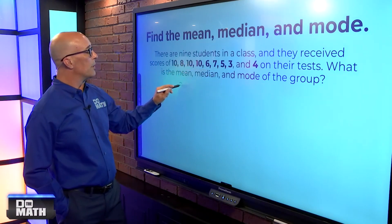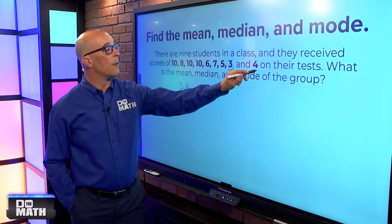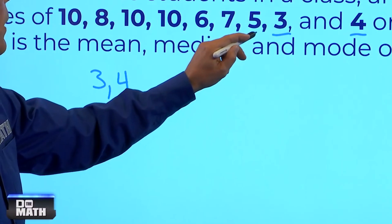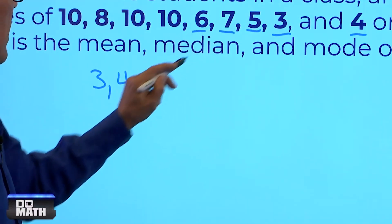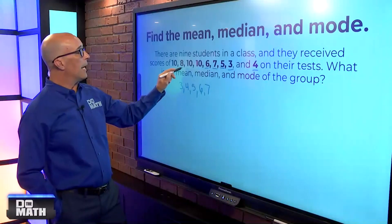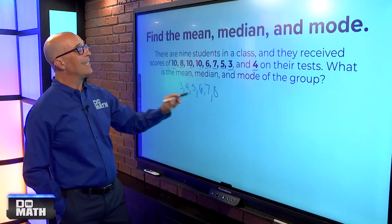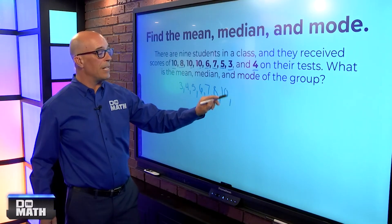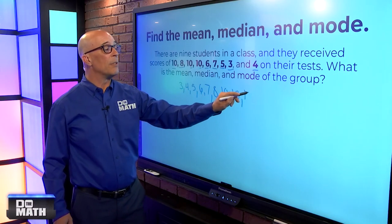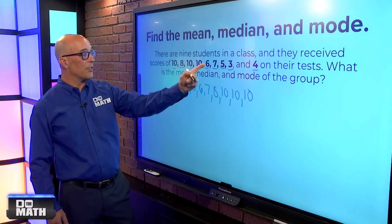So, we know that we have a 3 is the smallest. Then we have a 4. And I'm just going to underline those so I know I use them. We only have 1, 5, 1, 6, 1, 7. So, I'll put a 5, a 6, and a 7. I know I have an 8. And now I have 3 tens. So, I need to write down 10 three different times. Even though it's the same number, we need to represent it as many times as it's listed in the set.